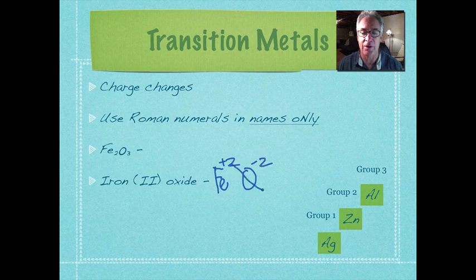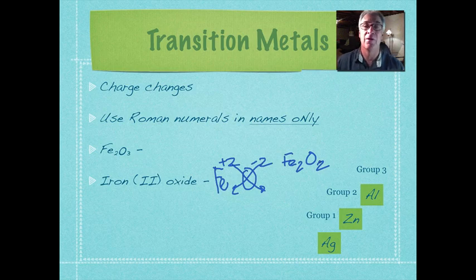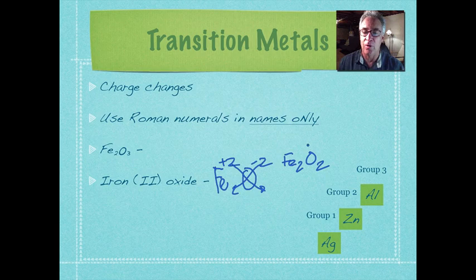In this case, we apply the crisscross rule here and here. So it's Fe2O2, right? Well, no, you use the lowest common denominator in this particular case.